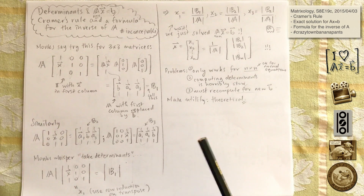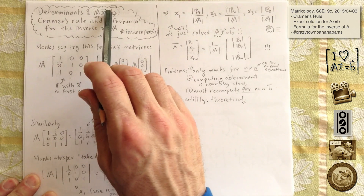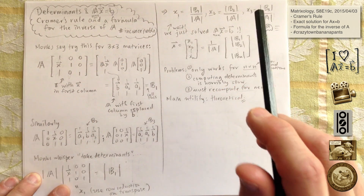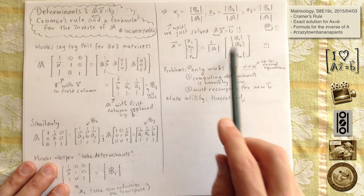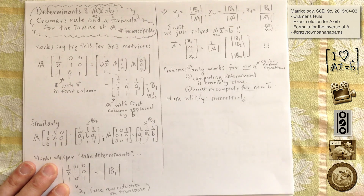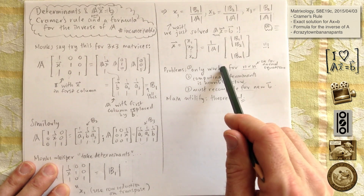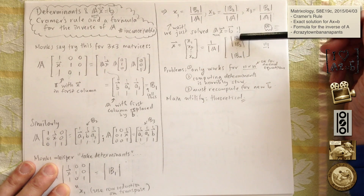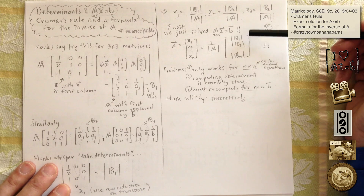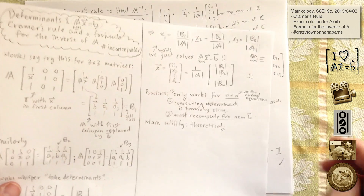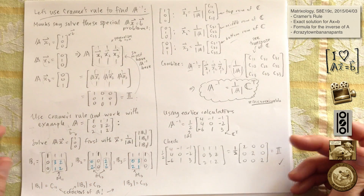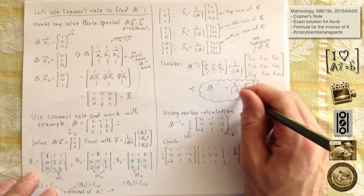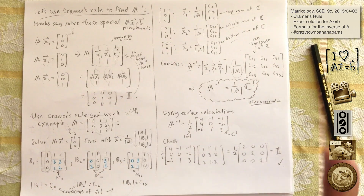So to reconnect: we're solving Ax equals b, and we found that x can be written as an explicit formula — which is strange, since we haven't had anything like this. Here is an actual formula. It involves determinants — n plus one of them — horribly nasty things to calculate. If someone gives you another b, you have to start again, so that's bad. But useful for small things. Then we used that to find a formula for the inverse of A, and there it is — amazing.